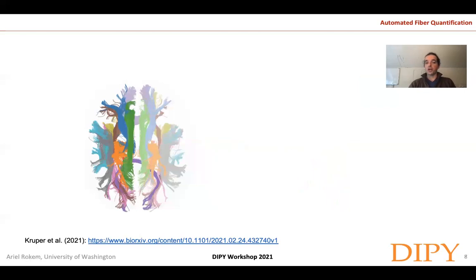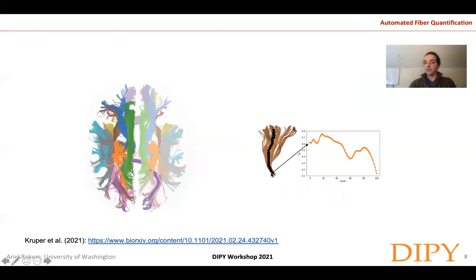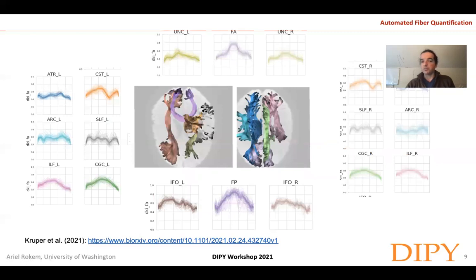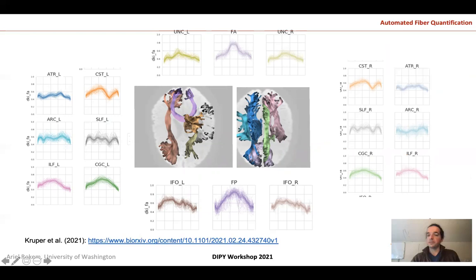We can do that for every pathway in the brain. Here we've extracted 18 major pathways. The idea behind resampling to 100 points is that at every node along the length of the path, we sample over all the streamlines and extract the FA, placing a point at each node — what we call track profiles. Here you can see track profiles in 44 individuals from the Human Connectome Project test-retest data set across a variety of anatomical bundles, showing variability across individuals and patterns such as the right and left corticospinal tract being quite symmetrical.